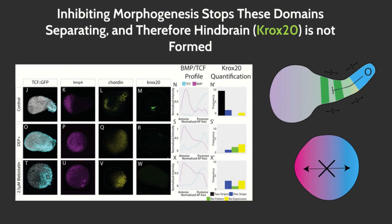When we inhibit morphogenesis through injection of a dominant negative dishevelled construct, which blocks convergence and extension movements, or by using the drug blebbistatin, we observe that pescoids do not elongate. When elongation is blocked, we observe that the BMP and Wnt domains do not fully separate to generate this low BMP, low Wnt domain. This also leads to an inhibition of Crox20 expression. Therefore, we conclude that explant elongation is required for setting up a rudimentary anterior-posterior axis in pescoids.